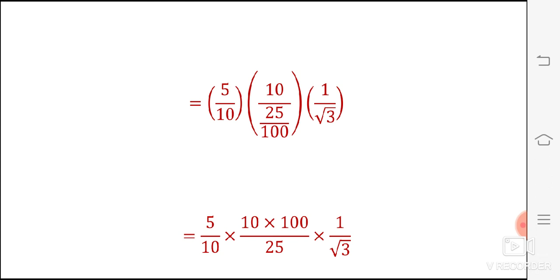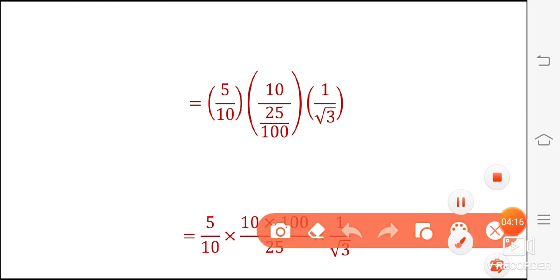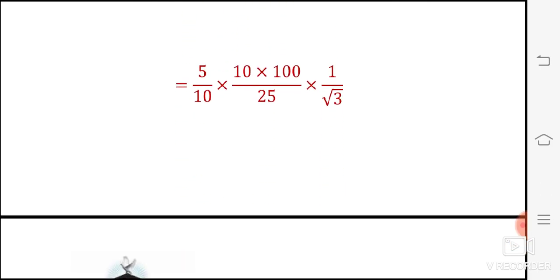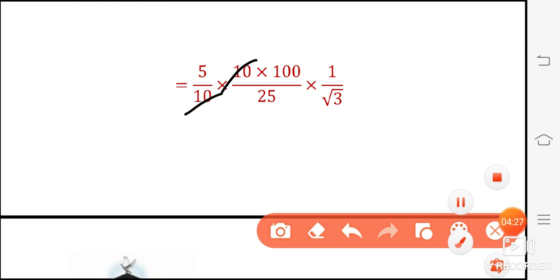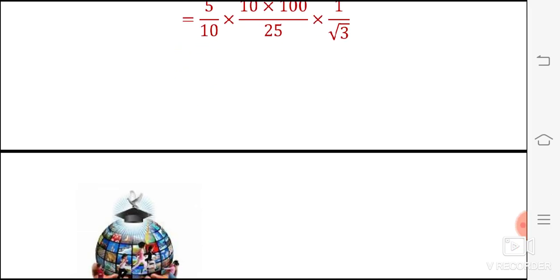Denominator by denominator, numerator. This goes to numerator. Now solving this, 10 cancel, 1, 4. So 5 into 4 is 20. So 20 divided by root 3.